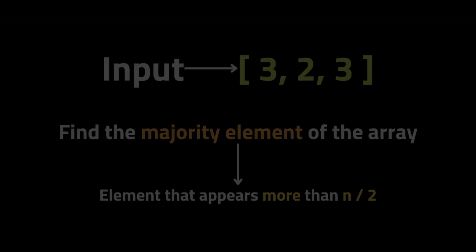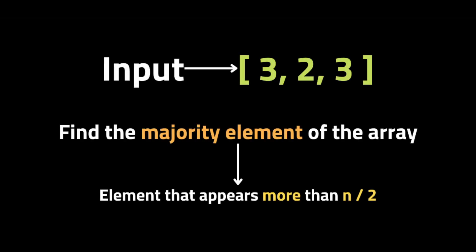The problem gives us an array of integers of size n and asks us to find the majority element of the array. The majority element is an element that appears more than n divided by 2 times, where n is the length of the array.